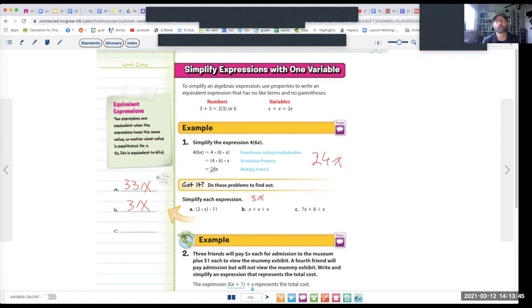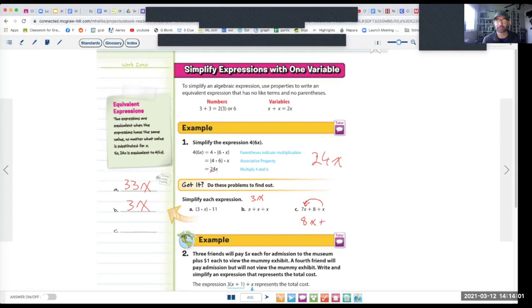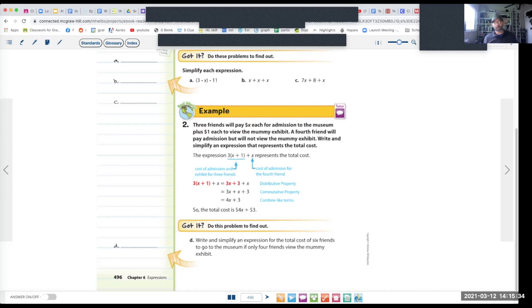All right, so this is just like what we're doing in the Minecraft example or the things we did the other day with the fruit. So I have 7x plus 8 plus x. We're going to put like terms together. So this is 7x plus one more x would make this 8x plus 8. Awesome.